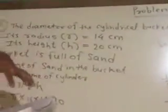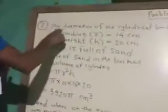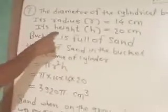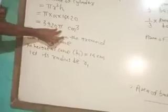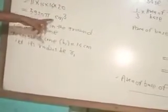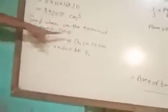Question number 7. A cylindrical bucket of diameter 28 cm, height 20 cm, was full of sand. When the sand is on the ground, it makes the cone into a cone, and its height of the cone is 14 cm. What was the base area of the cone? The diameter of the cylindrical bucket 28 cm, therefore its radius in bracket R equal to 14 cm. Its height in bracket H 20 cm. Bucket is full of sand, therefore volume of sand in the bucket equal to volume of cylinder. Because cylindrical that bucket, pi R square H. Pi into 14 into 14 into 20, 3920 pi cm cube. Sand when on the ground, makes a cone.